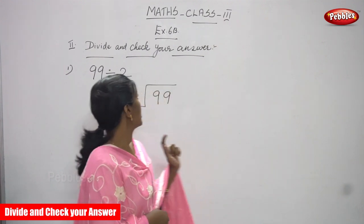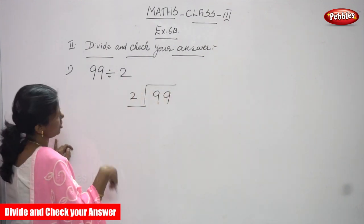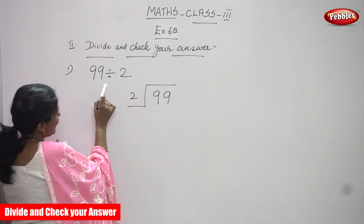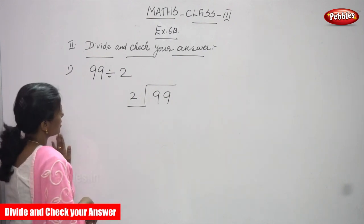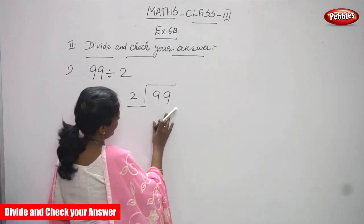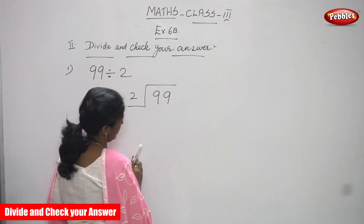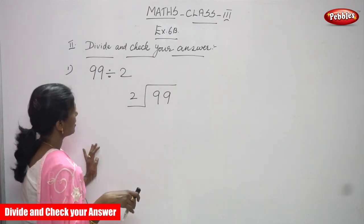Now we are going to do the second subdivision. Divide and check your answer. So 99 is going to be divided by 2. So 99 is the dividend and 2 is the divisor. Let's start the sum.